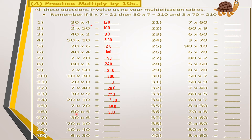For 30 multiplied by 6: 6 by 3 equals 18, drop down the zero, answer is 180. For 70 multiplied by 10: 7 by 1 equals 7, drop down the two zeros, answer is 700. For 40 multiplied by 10: 4 by 1 equals 4, drop down the two zeros, answer is 400. For 6 multiplied by 30: same as before, 6 by 3 equals 18, drop down zero — 180.